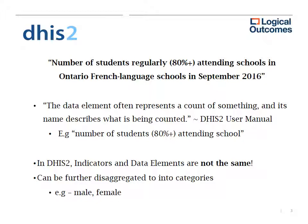In our example, the 'what' we're counting is the number of students attending schools at 80% or higher. To keep the exercise simple, we're assuming the calculation of 80% or higher has been done on paper prior to entering it into DHIS 2. One thing to note is that indicators and data elements in DHIS 2 are not the same things — data elements are raw counts, raw numbers, raw data, while indicators are calculations.